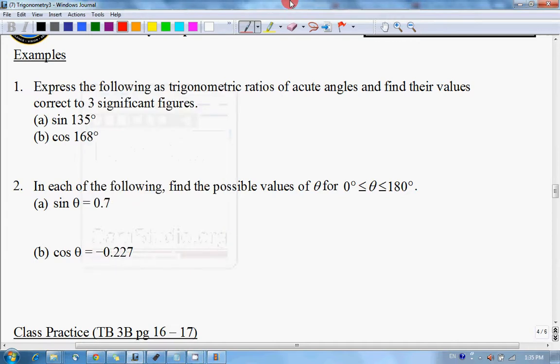Okay, now let's move on to solving and finding the trigonometric ratio of obtuse angles. Example one: what they want us to do is use the acute angle to find the three significant figure value of their trigonometric ratio.